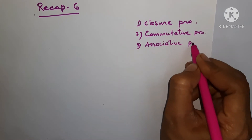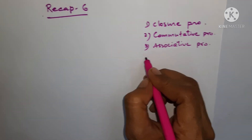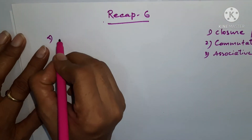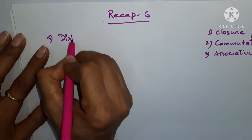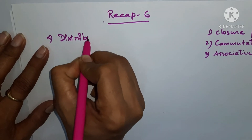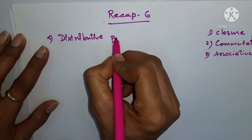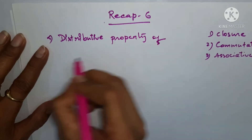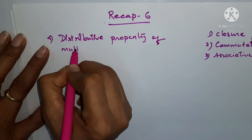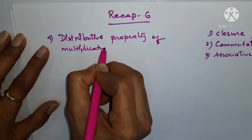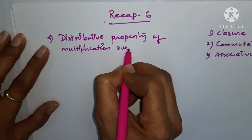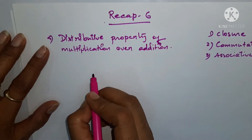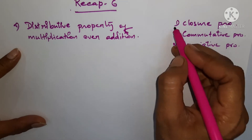Now the fourth property which we are going to do is the distributive property. Its full name is the distributive property of multiplication over addition.